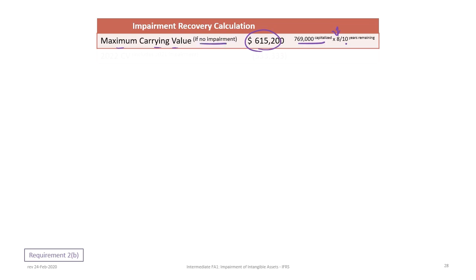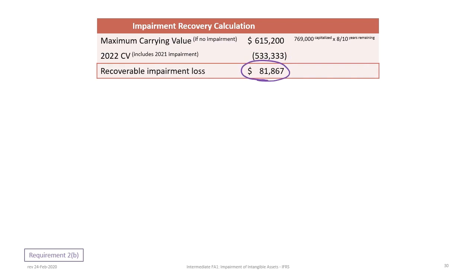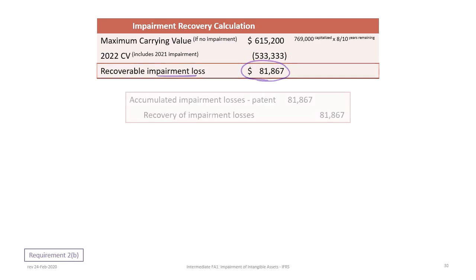To record the impairment recovery journal entry, we debit accumulated impairment losses for $81,867 and credit recovery of impairment losses for $81,867. The recovery of impairment losses is an income statement account, and accumulated impairment losses is a balance sheet account.